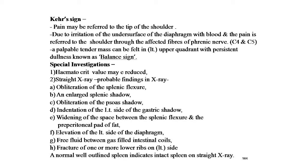Investigations: hematocrit values may be reduced. Straight X-ray probable findings include obliteration of the splenic flexure, enlarged splenic shadow, obliteration of the psoas shadow, indentation of the left side of the gastric shadow, widening of the space between the splenic flexure and the preperitoneal pad of fat, elevation of the left side of the diaphragm, free fluid between gas-filled intestinal coils, and fracture of lower left ribs. A normal well-outlined spleen on X-ray indicates an intact spleen.